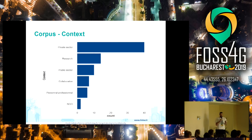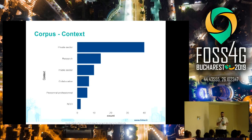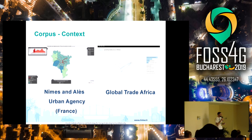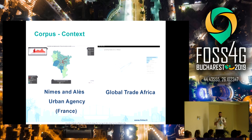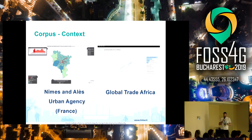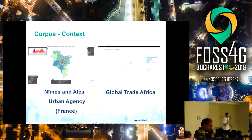There is also a significant amount of work from the public sector and research, which together form a large group. Some applications are collaborative, like the ones mentioned before. Some are from personal professionals working on their free time. One example is Nîmes and Alès Urban Agency — cities in the south of France — who published a web application to show commutes between cities at different times of day. Another is Global Trade Africa, a web application to visualize goods flows between Africa and China.